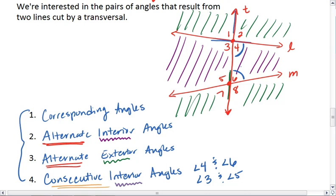Alternate interior angles mean that we are on alternate sides of the transversal and we are in between the two lines. Alternate exterior, again alternate side of the transversal, but we are on the outside of the two lines.